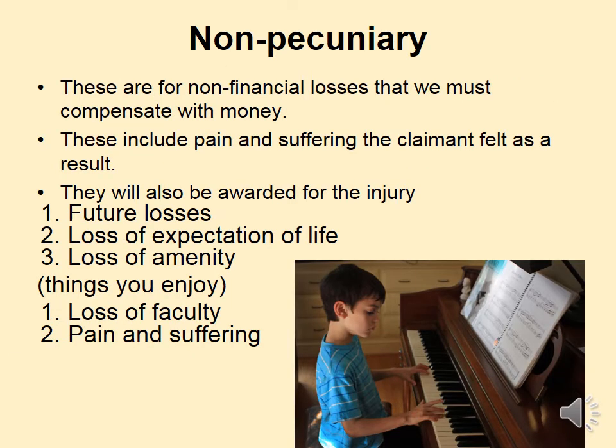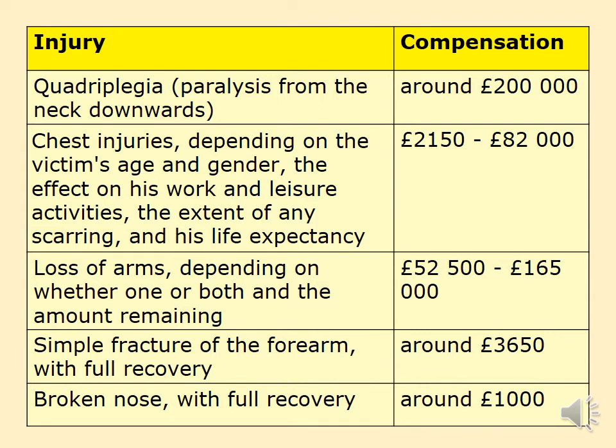Thinking about non-pecuniary losses — these are non-financial losses, but we have to compensate with money as it's the only thing at the defendant's disposal. Awards will be made for the injury as well as future losses, loss of expectation of life, loss of amenity (things that you enjoy such as playing the piano), loss of faculty (abilities that your body has, like hearing or vision), and an award for pain and suffering. As you can see from the slide, different types of injuries receive different levels of compensation — paralysis is around £200,000 at the top, whereas a broken nose with full recovery is around £1,000.